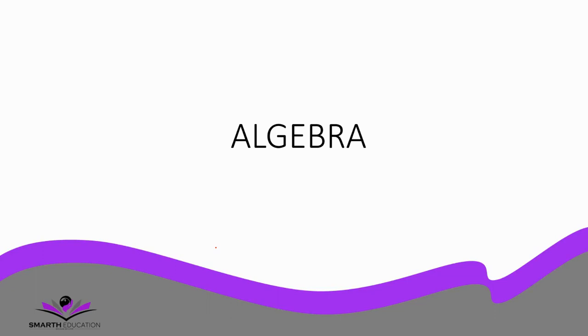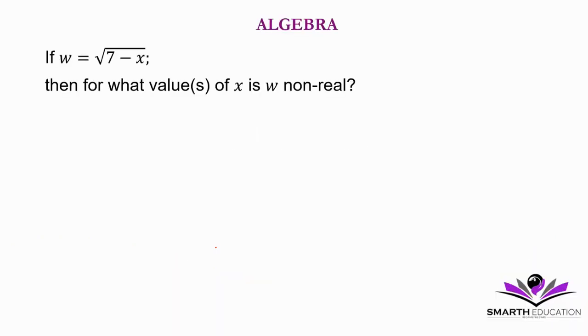Welcome back. Let's do equation 2c1. If w is equal to the square root of 7 minus x, then for what values of x is w non-real?